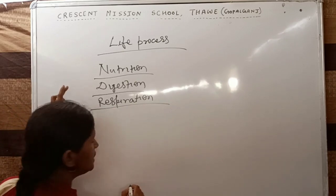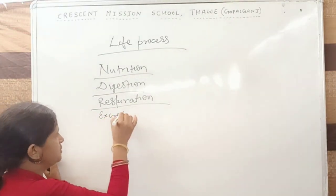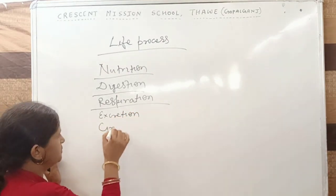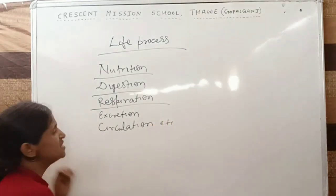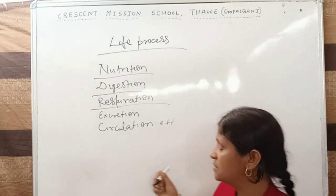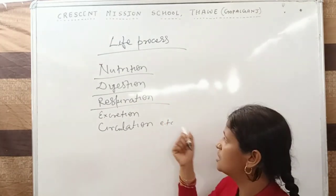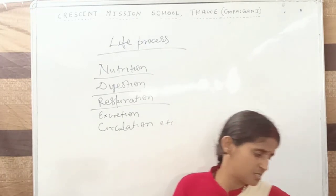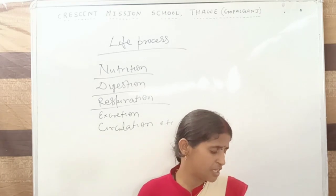The life processes include nutrition, digestion, respiration, excretion, and circulation. These processes are running in living creatures. Just I have listed their names: first nutrition, digestion, respiration, excretion, and circulation.